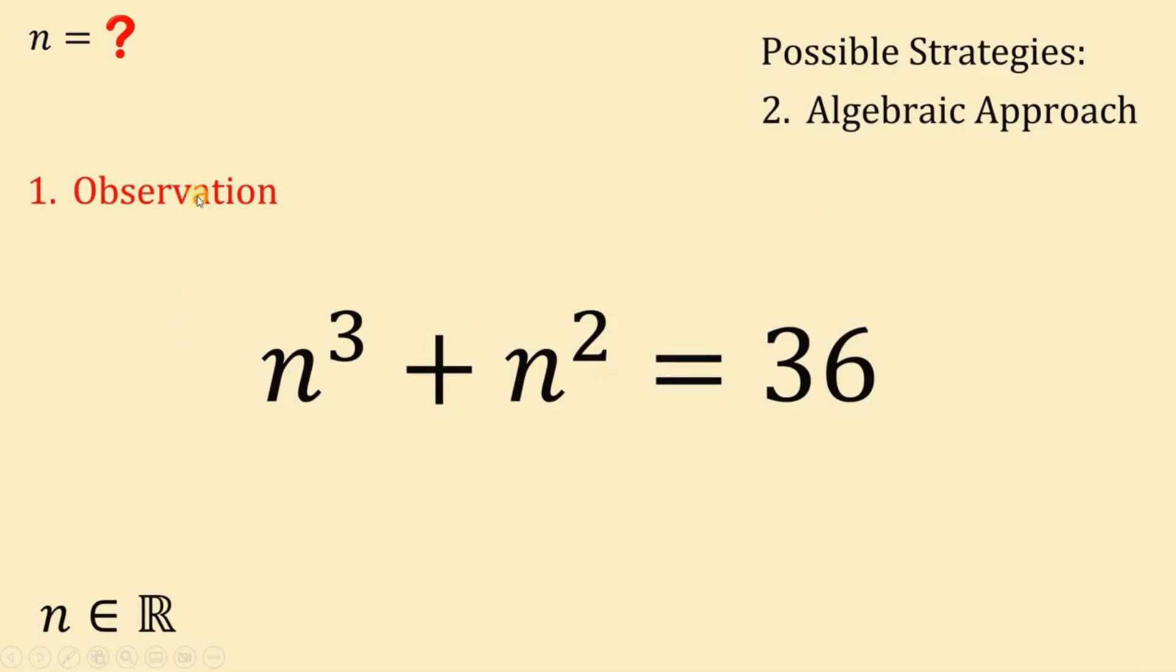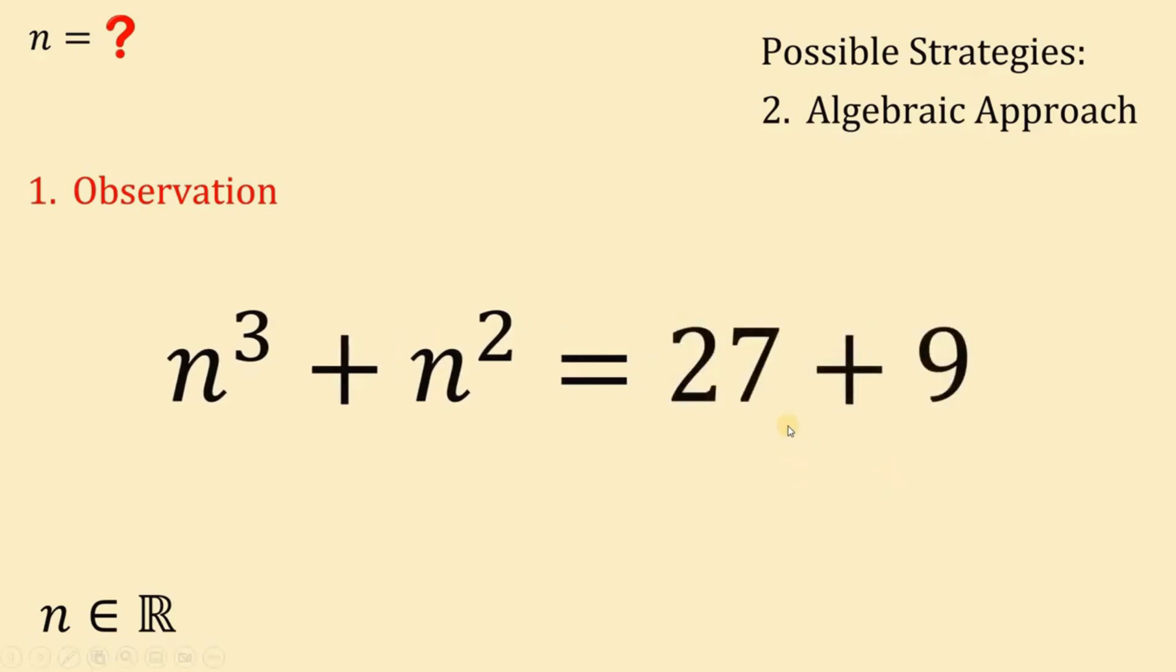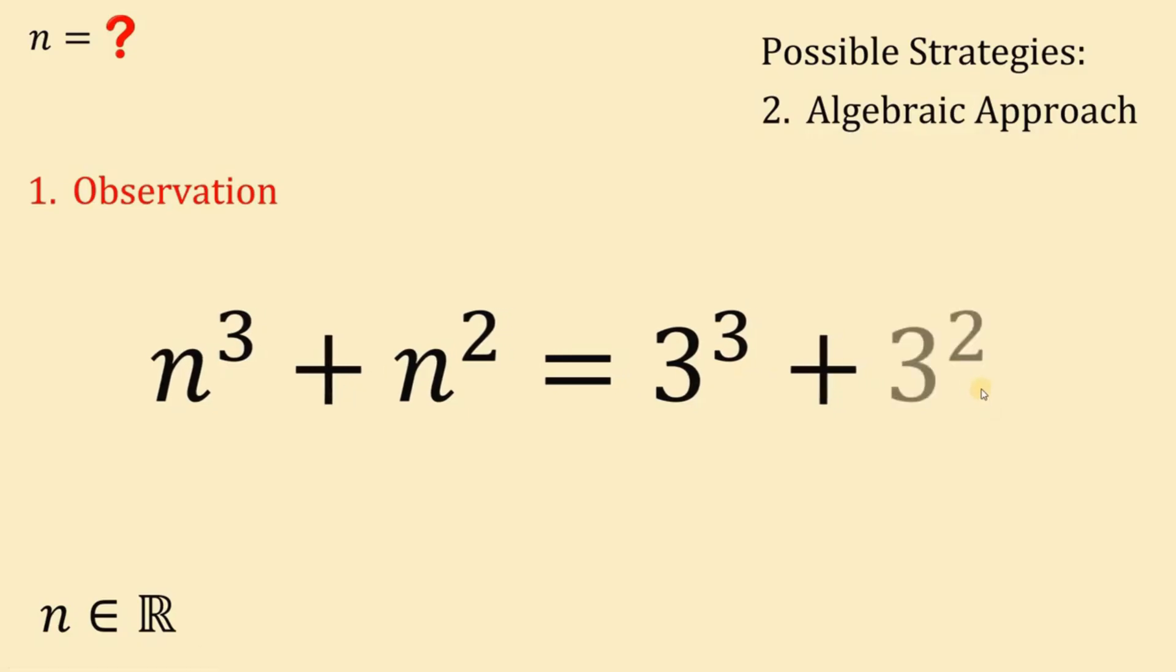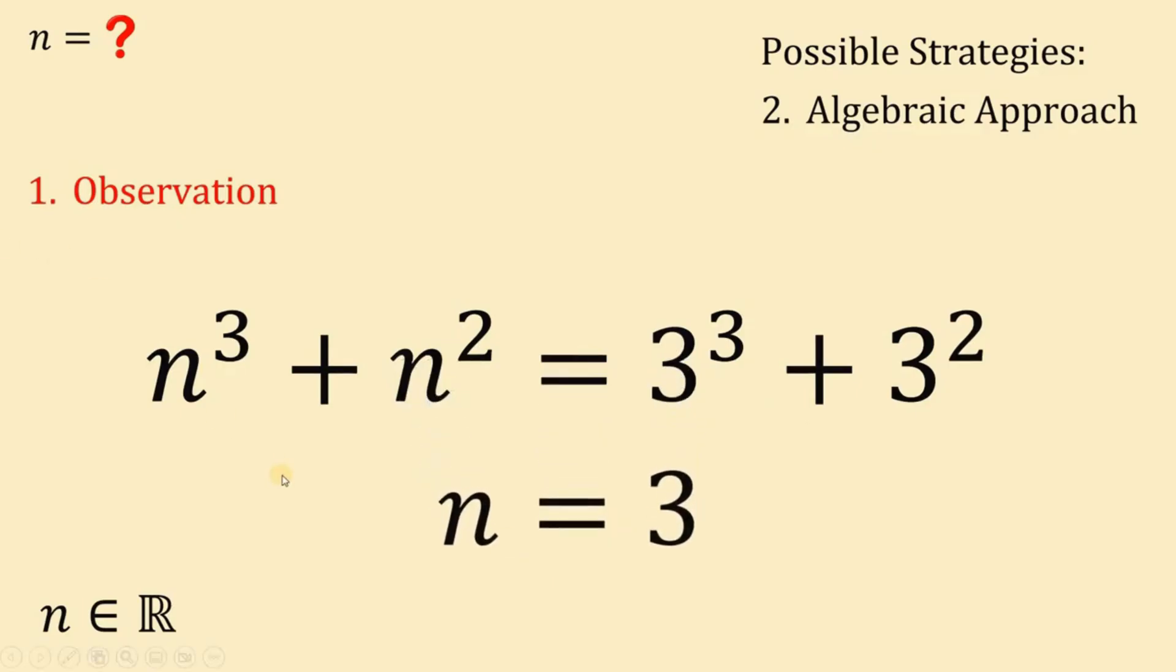As we observe, 36 is just 27 plus 9. And take note that 27 must be equal to 3 raised to 3 and this 9 is just 3 raised to the power of 2. Comparing the right-hand side to the left-hand side, we can say that n must be equal to 3. This is by observation. So we solve this question using observation.